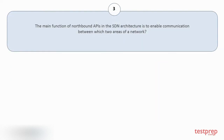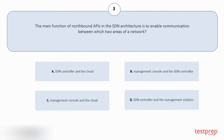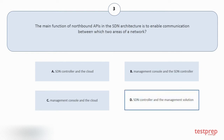Question number 3. The main function of northbound APIs in the SDN architecture is to enable communication between which two areas of a network? Your options are: A. SDN controller and the cloud. B. Management console and the SDN controller. C. Management console and the cloud. D. SDN controller and the management solution. The correct answer is option D.